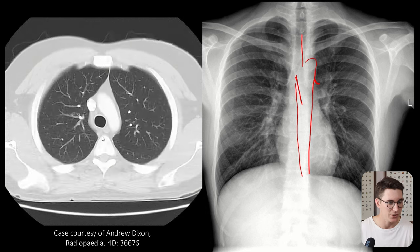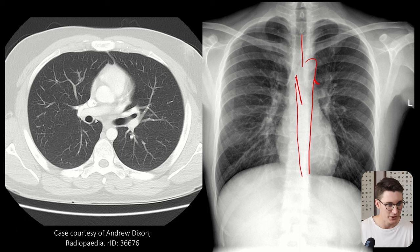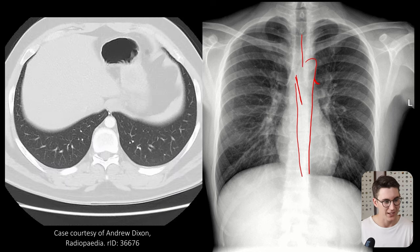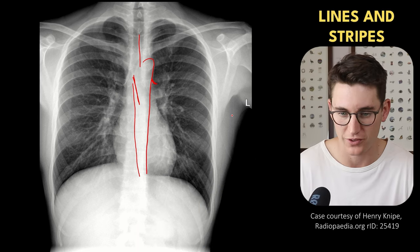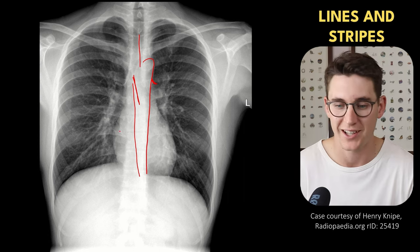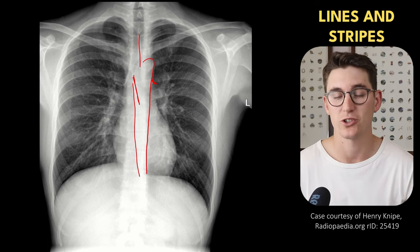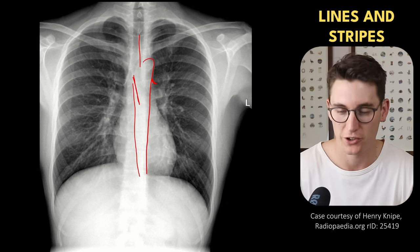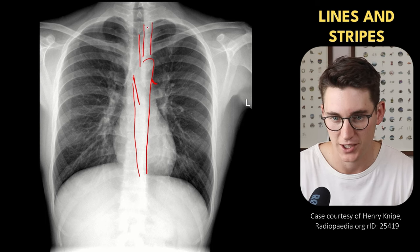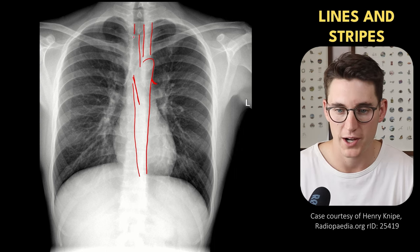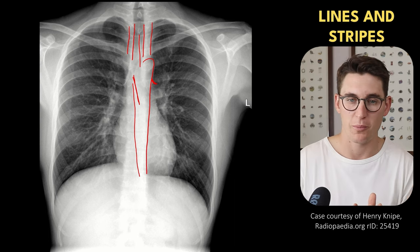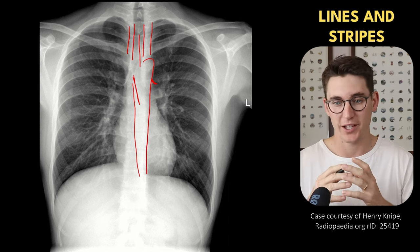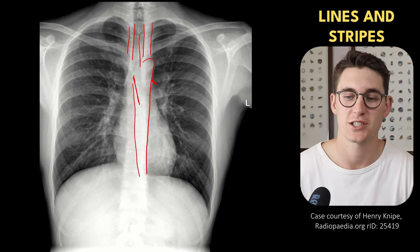We can see the azygous vein as we scroll down — there's aerated lung creating this line along the anterior aspect of our vertebrae, heading slightly to the left-hand side as we go down. So if you see loss of this recess and there's a mass here, you can predict that mass is posterior in that azygoesophageal recess. We also have what's known as stripes — like lines, but thicker, with lucency on both sides. A good example is our left paratracheal stripe and our right paratracheal stripe, where our great vessels come off from the brachiocephalic artery and the arch of the aorta. Widening of those stripes can suggest tumors like a pancoast tumor or enlarged lymph nodes.